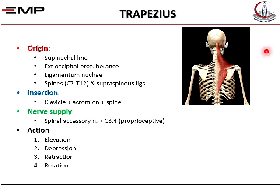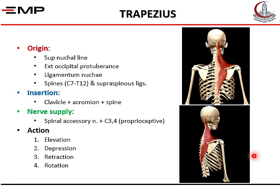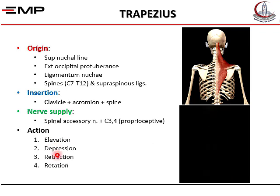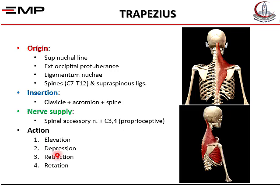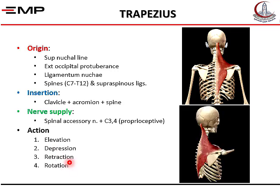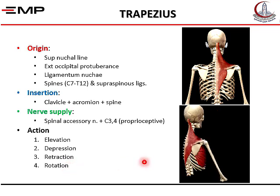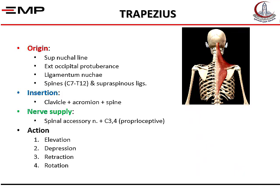Its nerve supply is by a cranial nerve — the spinal accessory. It is not supplied by the brachial plexus, and it receives proprioceptive fibers from the cervical plexus from C3 and C4. Its actions are: upper fibers elevate the scapula, lower fibers depress the scapula, middle fibers retract the scapula, and acting together, the upper and lower fibers together with the serratus anterior rotate the scapula when raising the arm above the head.